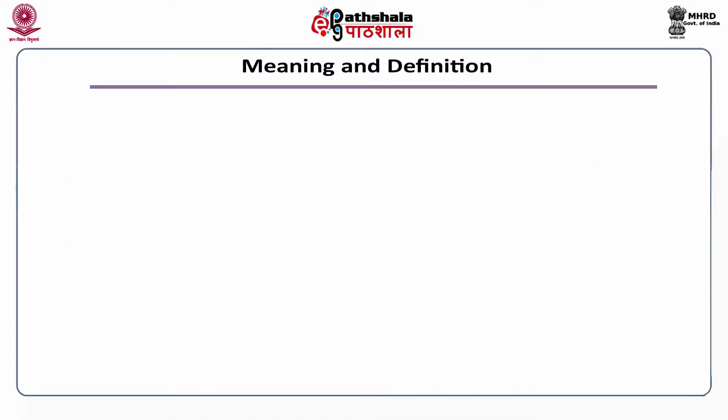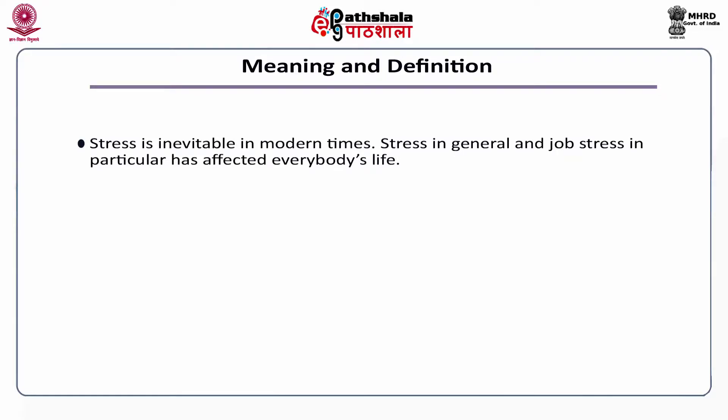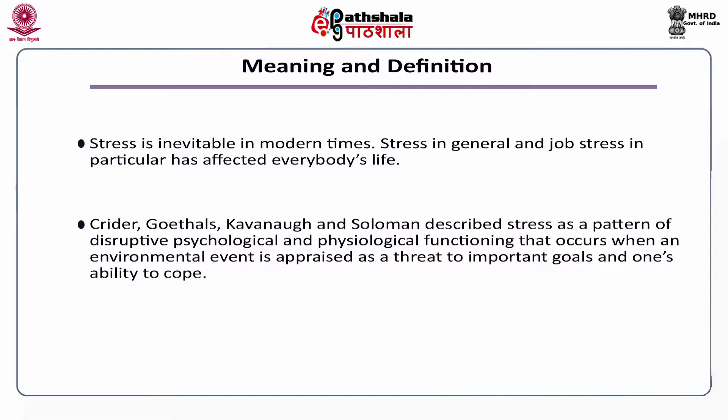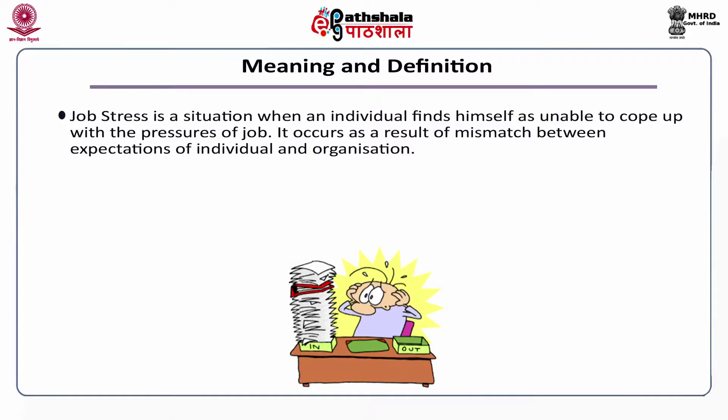Stress – meaning and definition. Stress is inevitable in modern times. Stress in general, and job stress in particular, has affected everybody's life. Kreider, Goetholz, Kavanagh, and Solomon described stress as a pattern of disruptive psychological and physiological functioning that occurs when an environmental event is appraised as a threat to important goals and one's ability to cope. Job stress is a situation when an individual finds himself unable to cope up with the pressure of a job; it occurs as a result of a mismatch between the expectations of the individual and the organization.